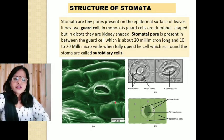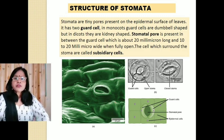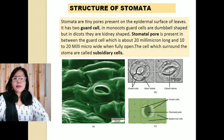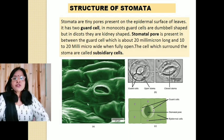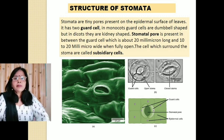Structure of stomata: stomata are tiny pores present on the epidermal surface of leaves. Each stoma has three parts: guard cells, stomatal aperture, and subsidiary cells. It has two kidney-shaped guard cells in dicot plants, while in monocots the guard cells are dumbbell-shaped. The stomatal pore is present in the center of the guard cells, about 20 millimicrons long and 10 to 20 millimicrons wide.